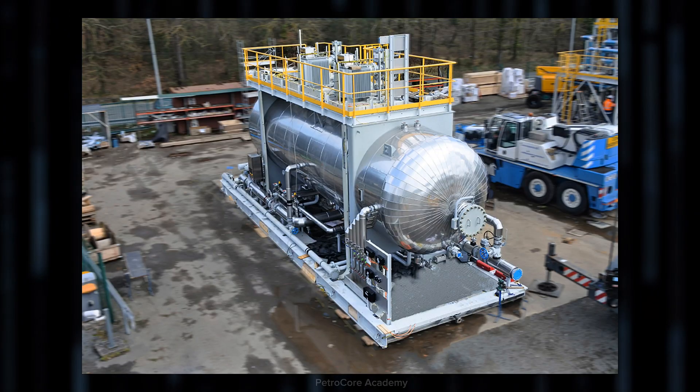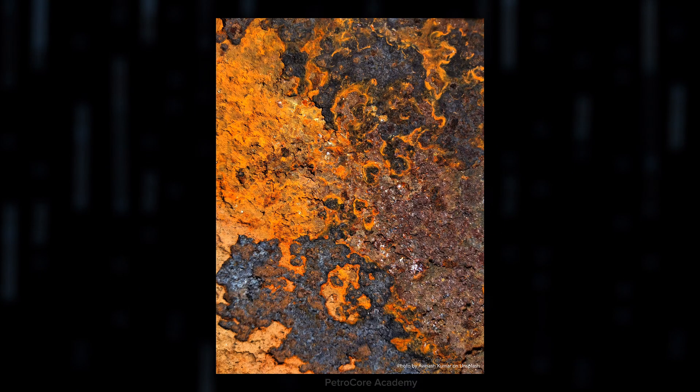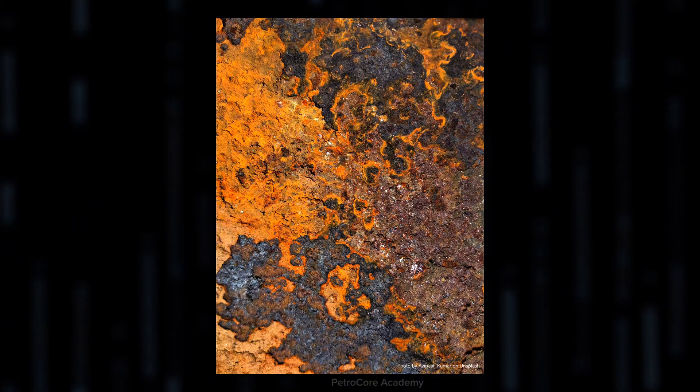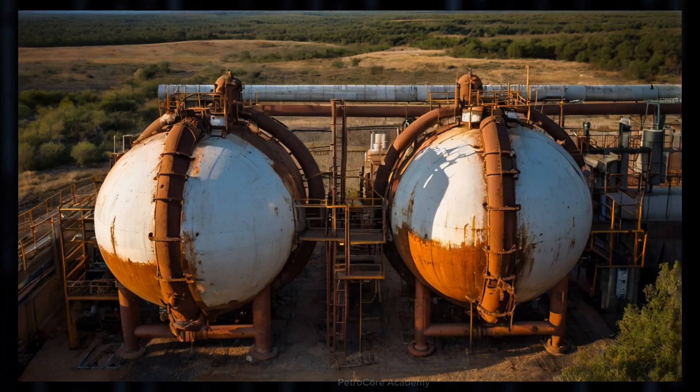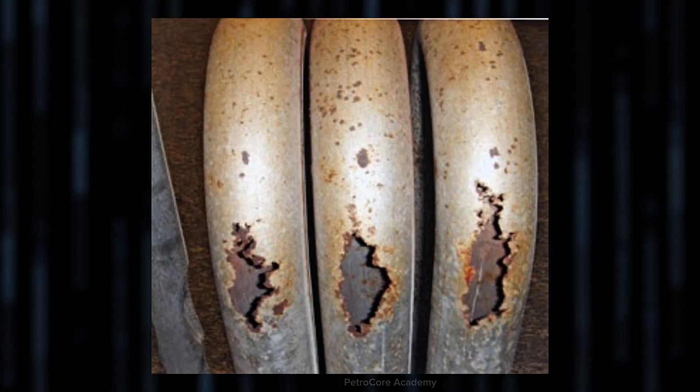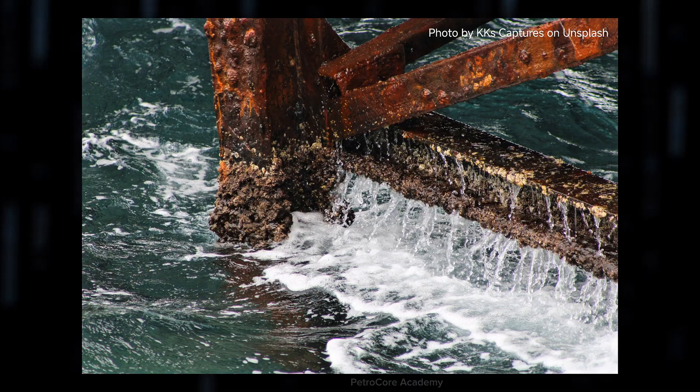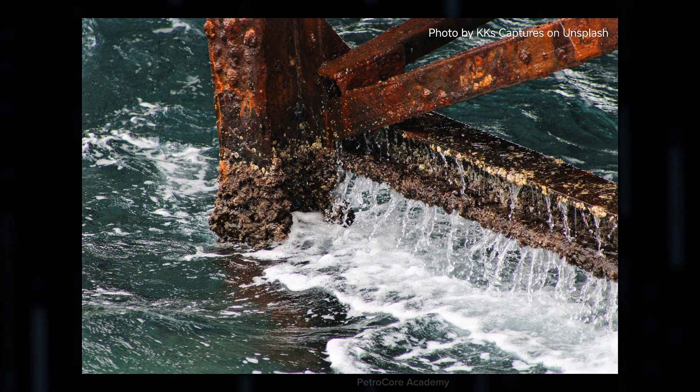It's like getting taken out by a paper cut. You'll find pitting corrosion causing mischief in all the usual trouble spots: offshore platforms, storage tanks, pipelines, heat exchangers, you name it. If it's metal and in a harsh environment, pitting wants in.